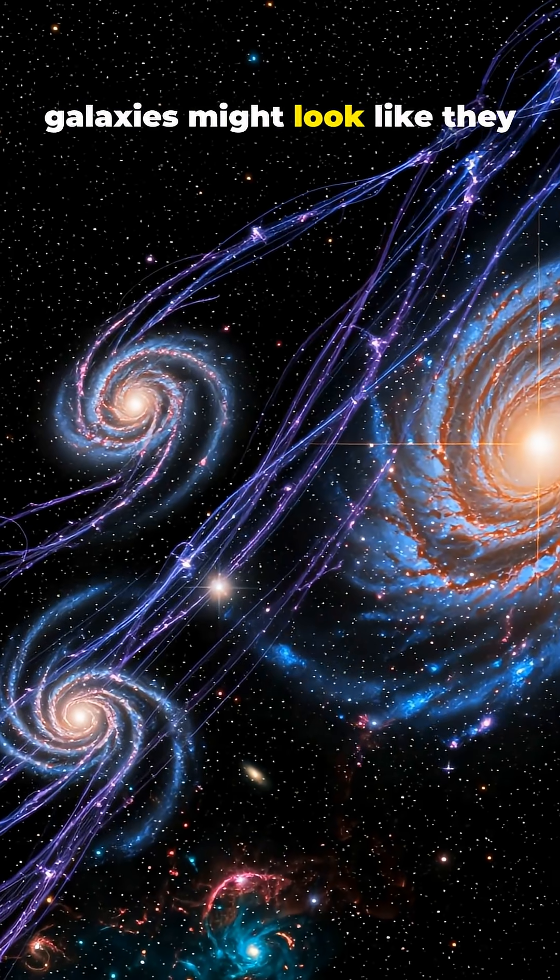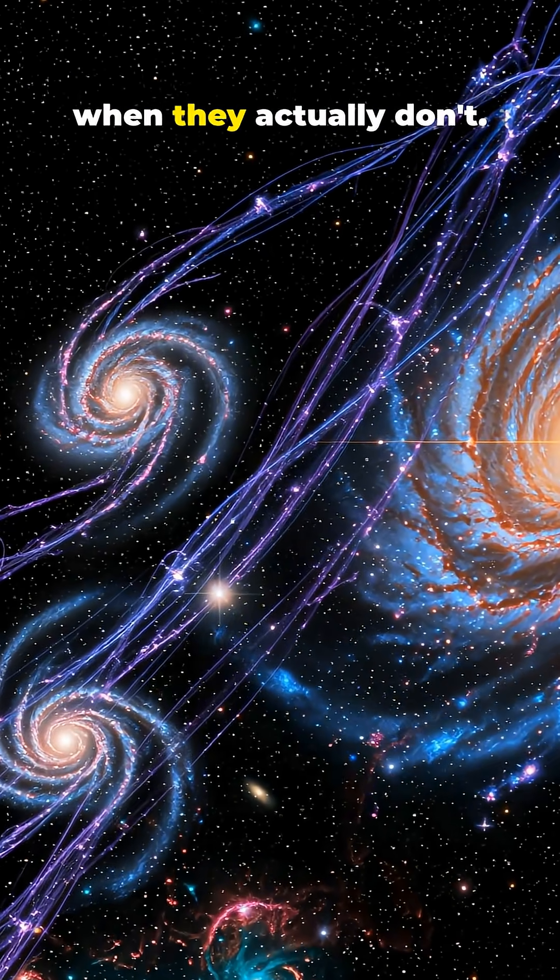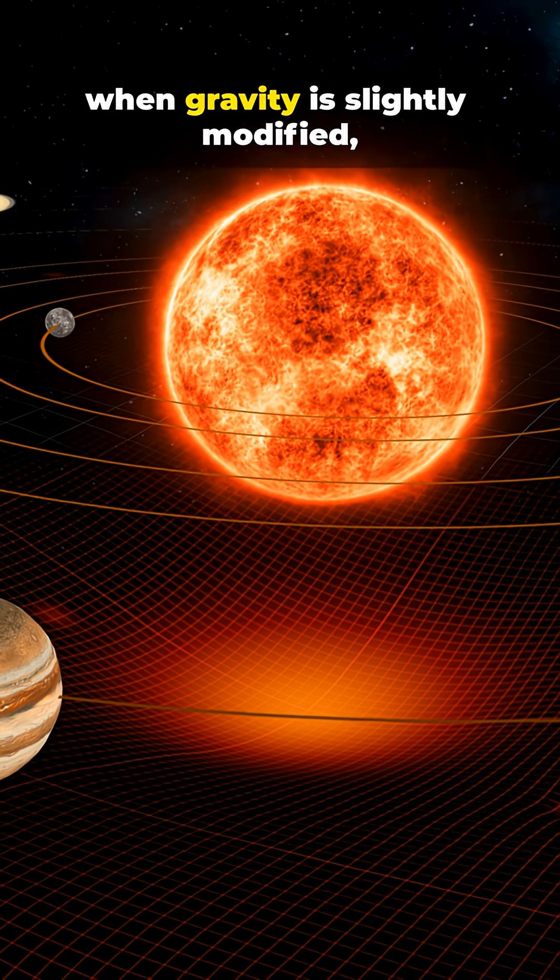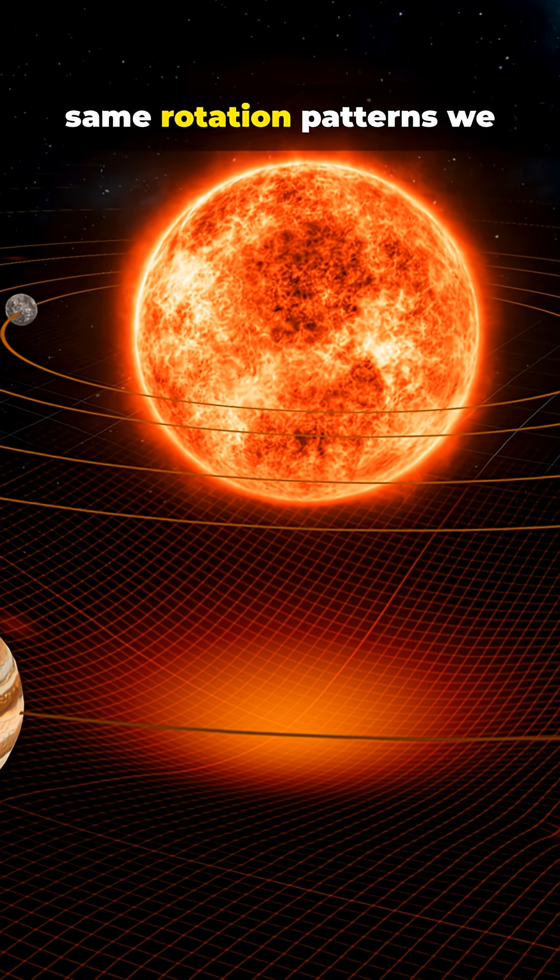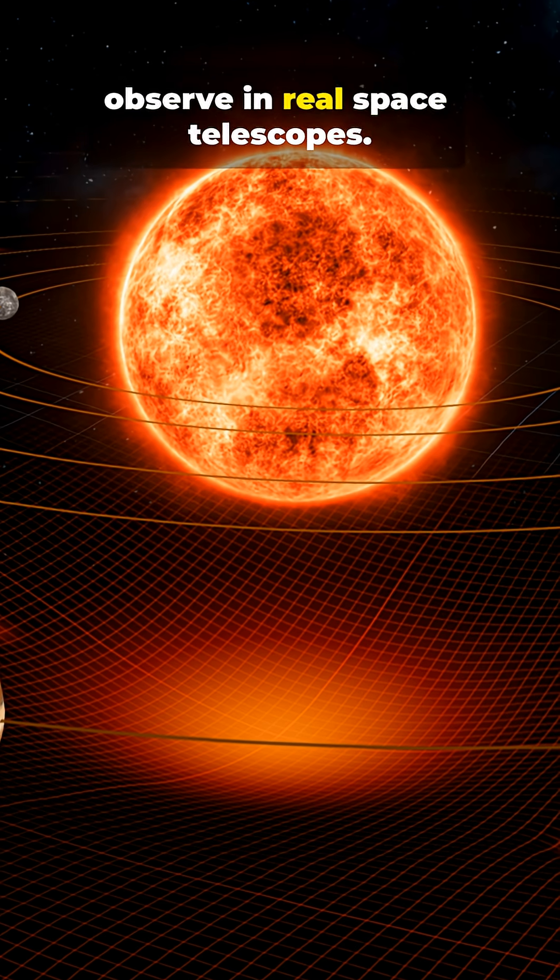In other words, galaxies might look like they contain dark matter when they actually don't. Recent simulations show that when gravity is slightly modified, galaxies form with the exact same rotation patterns we observe in real space telescopes.